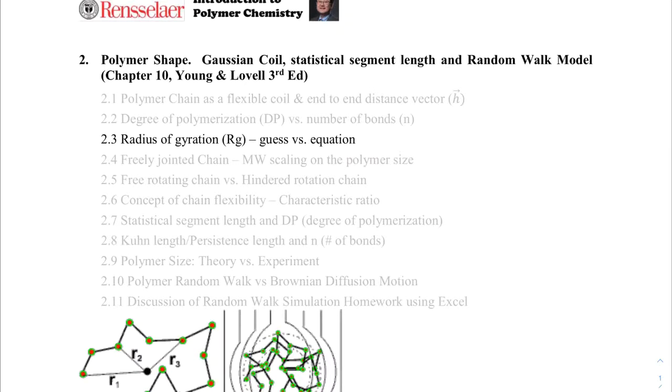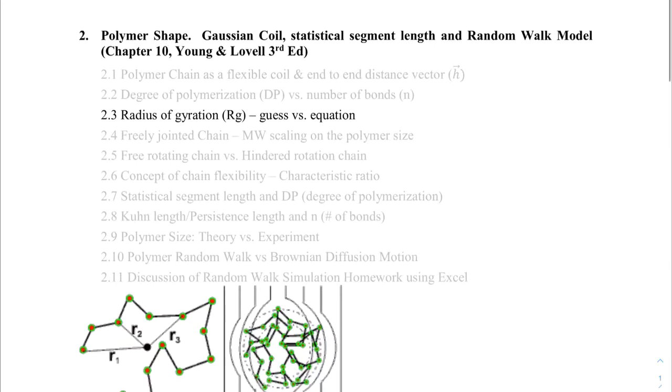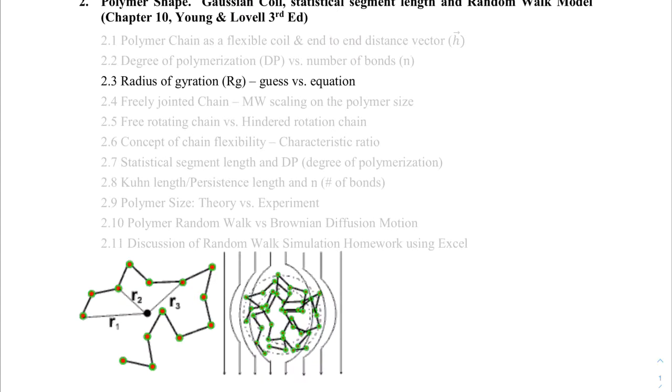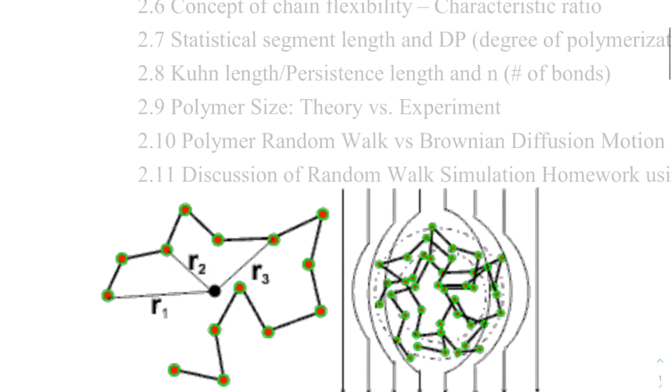So let's talk about radius of gyration from a very simple point of view, trying to estimate the size of the polymer chain. Radius of gyration can be shown as a picture on the left here. So this dot here is essentially the center of mass. So the cm is what I want to put in. So this is the center of mass.